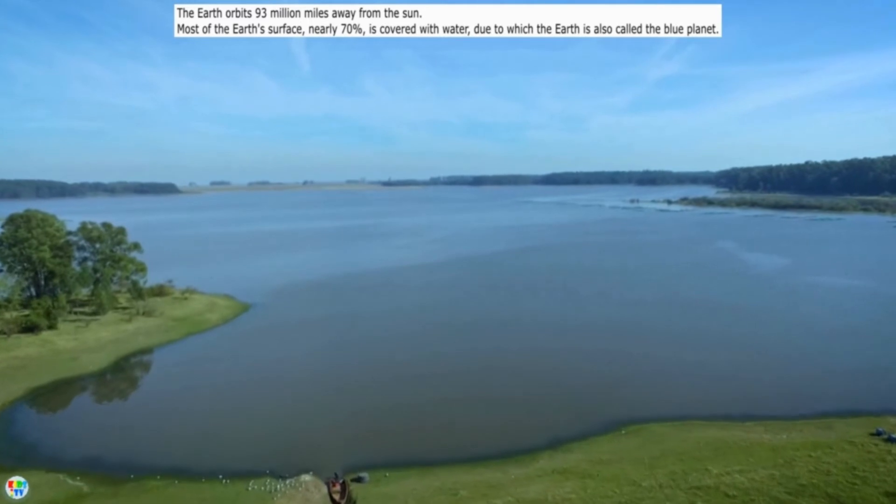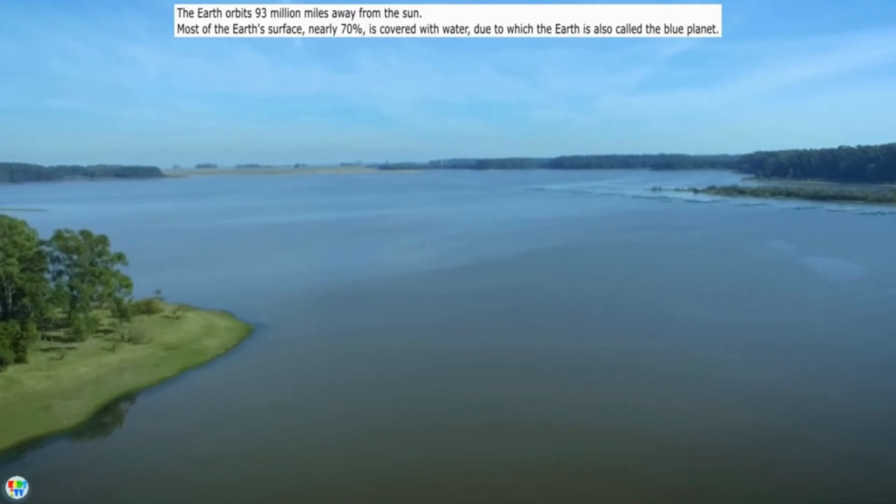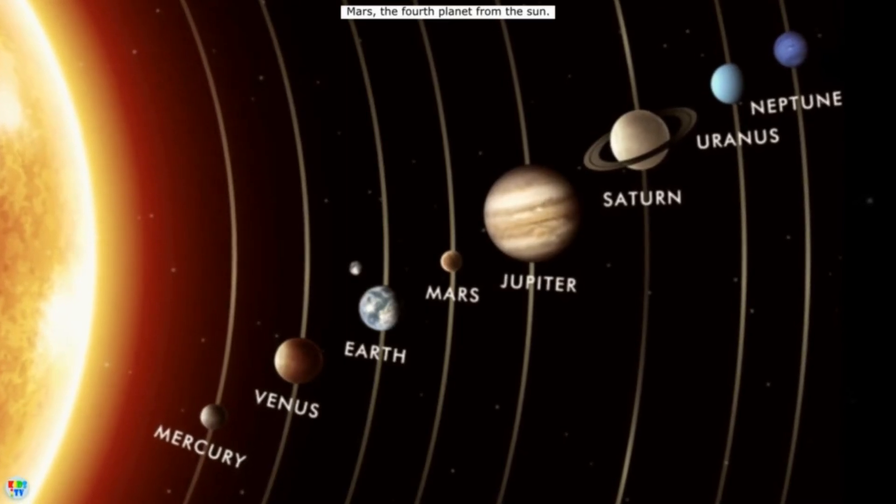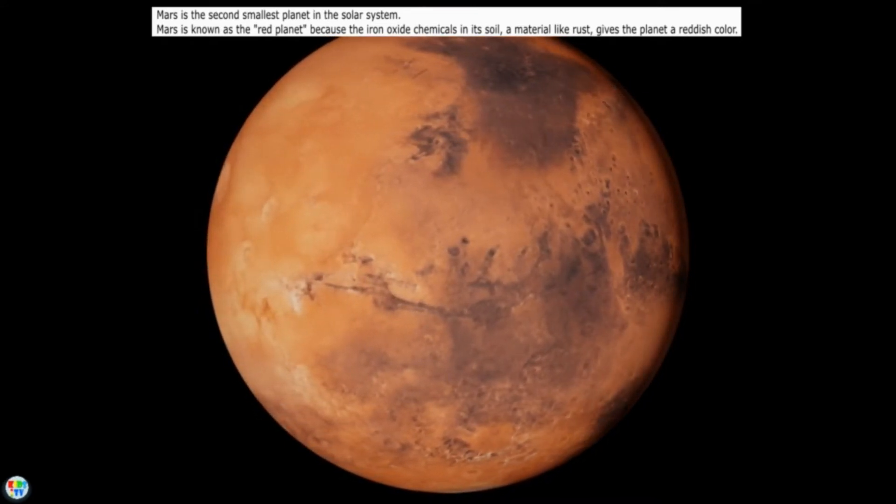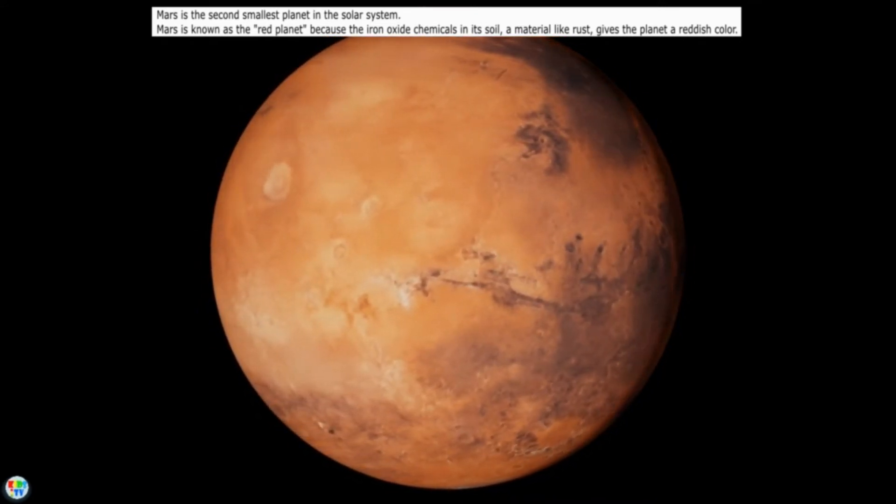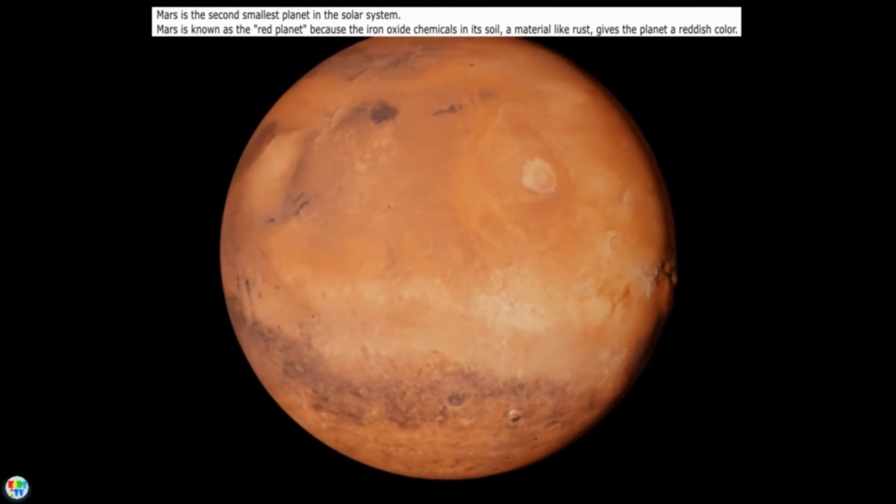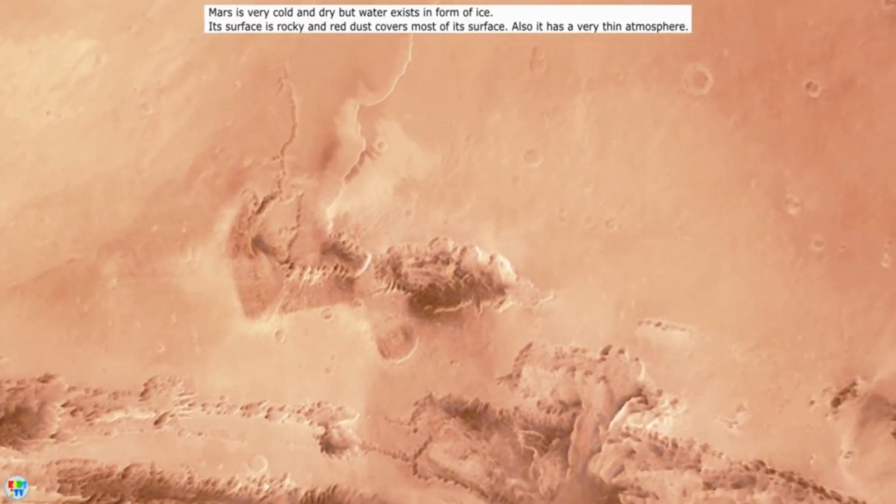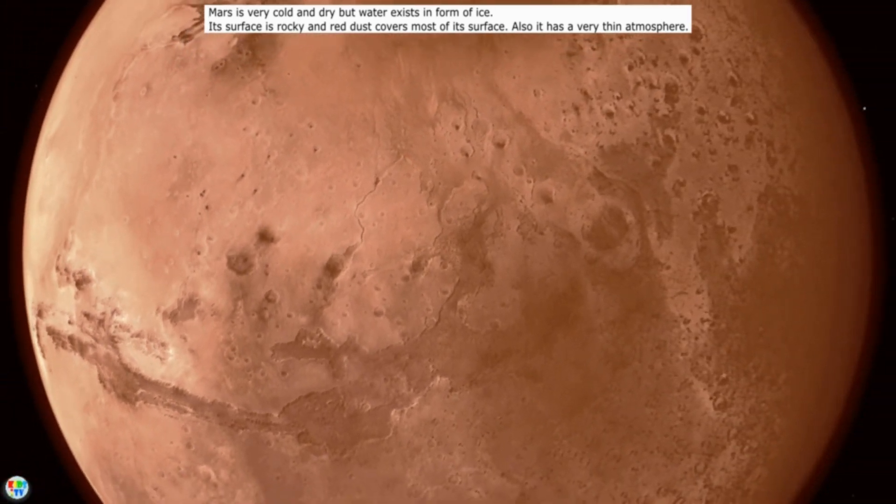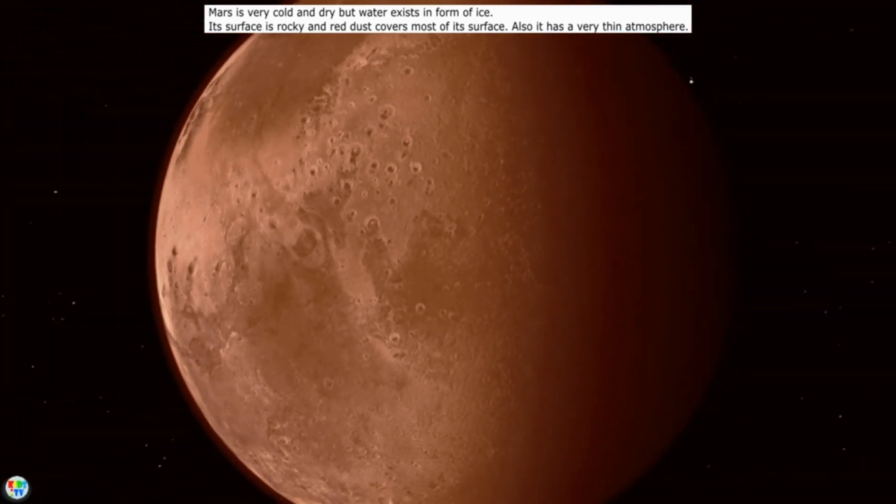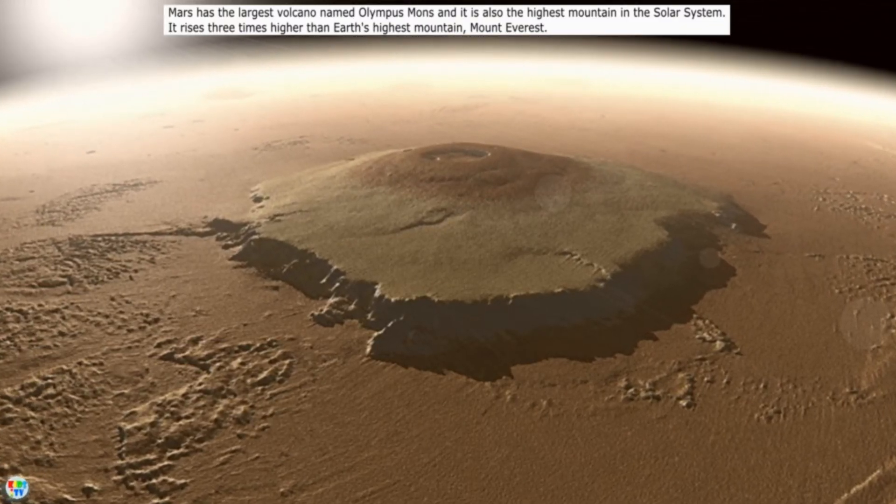Most of the Earth's surface, nearly 70%, is covered with water, due to which the Earth is also called the blue planet. Mars, the fourth planet from the Sun. Mars is the second smallest planet in the solar system. Mars is known as the red planet because the iron oxide chemicals in its soil, a material like rust, gives the planet a reddish color. Mars is very cold and dry, but water exists in form of ice. Its surface is rocky and red dust covers most of its surface. Also, it has a very thin atmosphere.